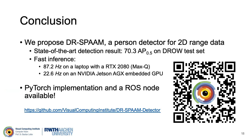In conclusion, we propose DRSPAN, a person detector for 2D range data. It establishes a new state-of-the-art result, achieving 70.3 AP on the dataset. It has a high inference rate, measured at 87.2Hz on a laptop with a dedicated GPU, or at 22.6Hz on an NVIDIA Jetson AGX with an embedded GPU. DRSPAN is well suited for robotic applications. Please check out the link below for our PyTorch implementation, including an example ROS node. The link also contains post-submission updates that further improve detection performance and inference speed beyond what is shown in this video.